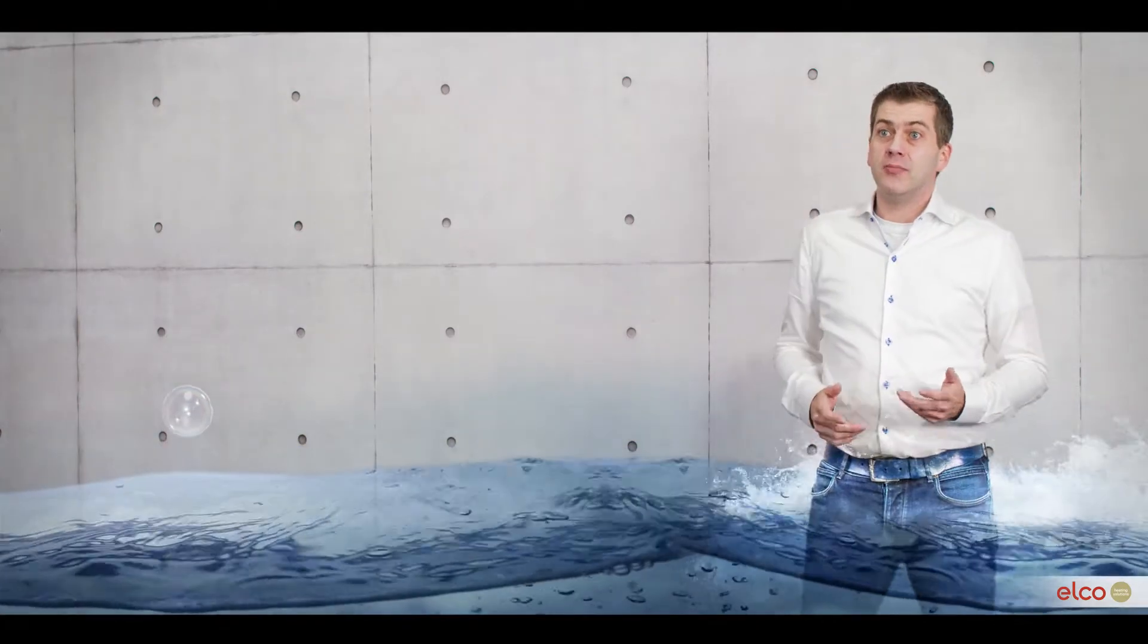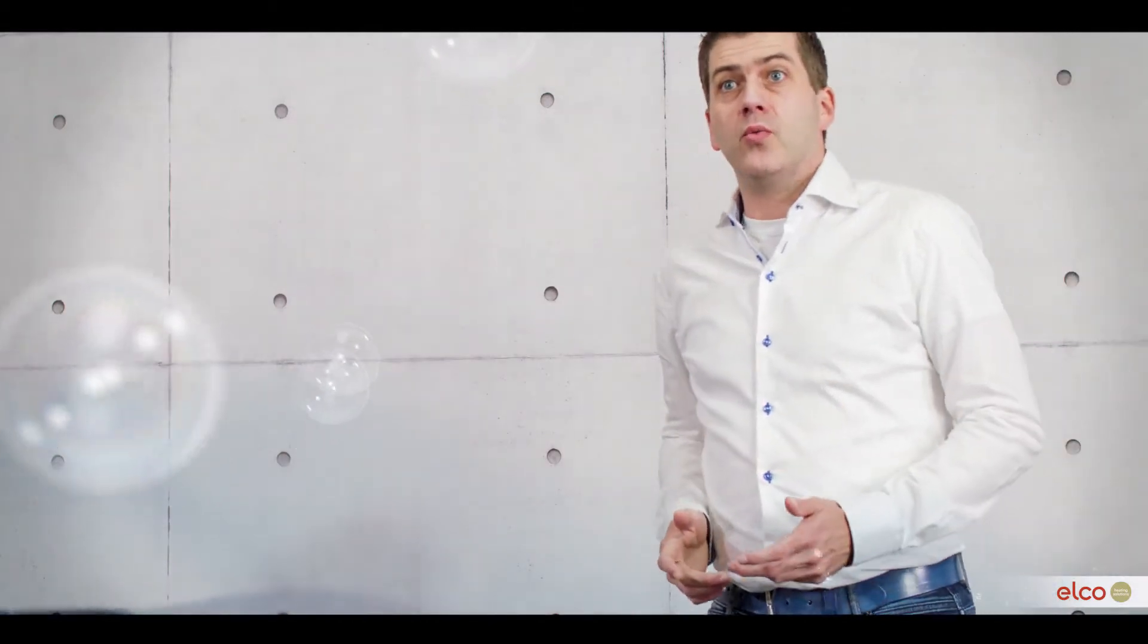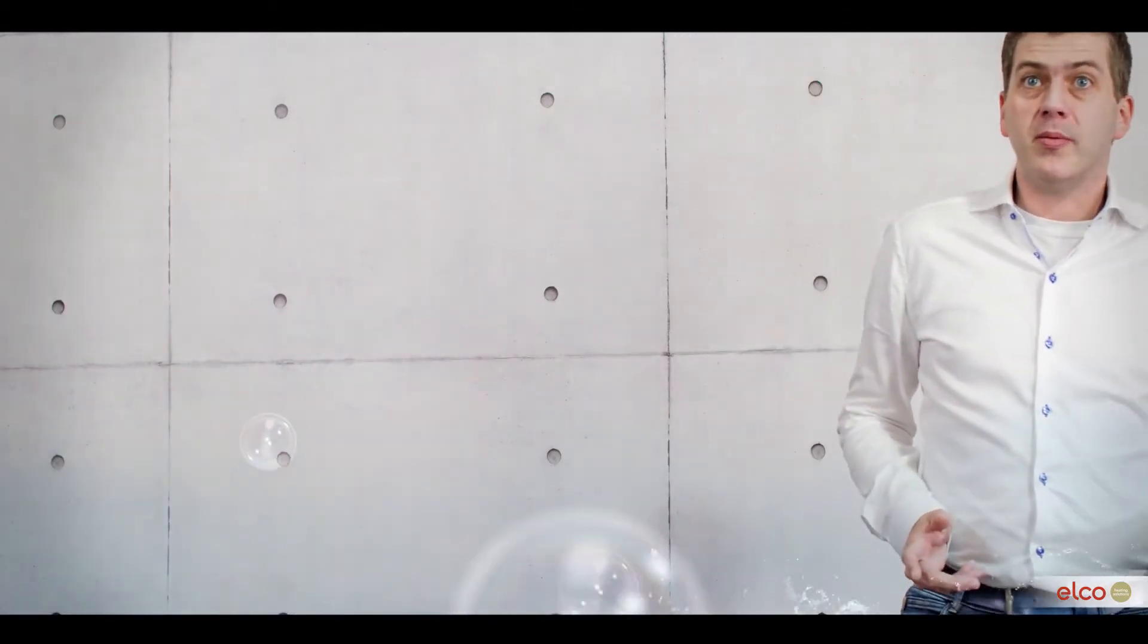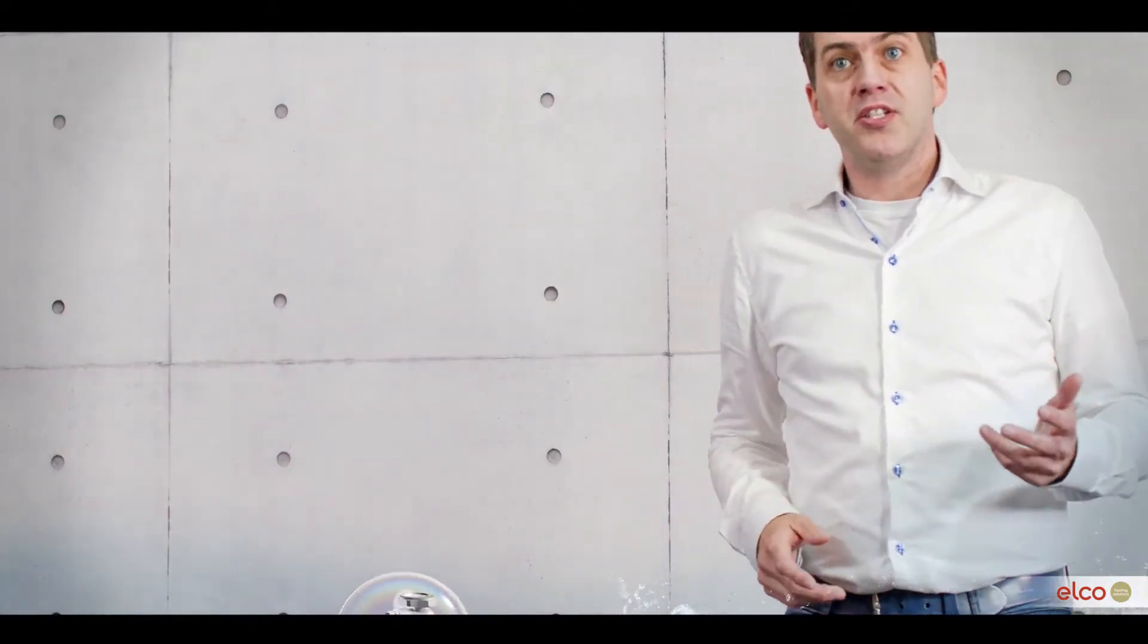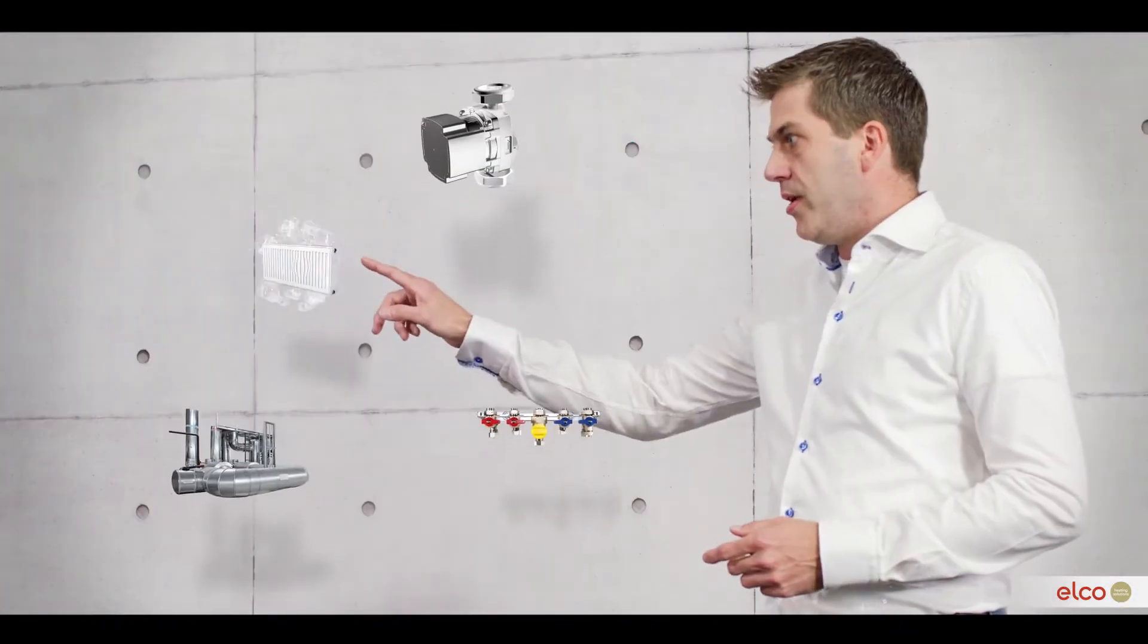However, corrosion on the water side is not the most important factor for choosing the heat exchanger's material. As the minimum required water quality is also affected by other materials used in the heating system, such as pumps, valves, pipes and radiators.